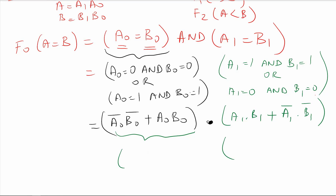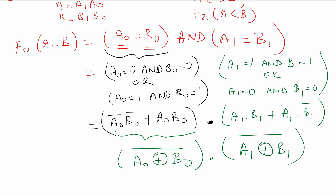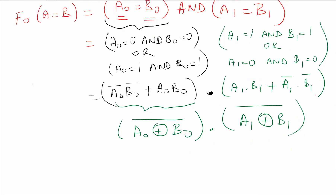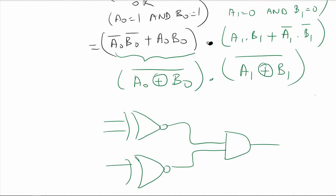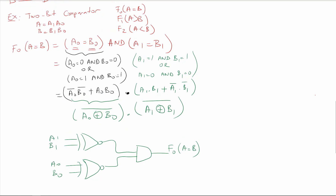Essentially, each of those expressions is an XNOR operation: (A0 XNOR B0) AND (A1 XNOR B1). So the circuit has two XNOR gates combined with an AND gate — inputs A1, B1, A0, B0 — and the output is F0, where A equals B.